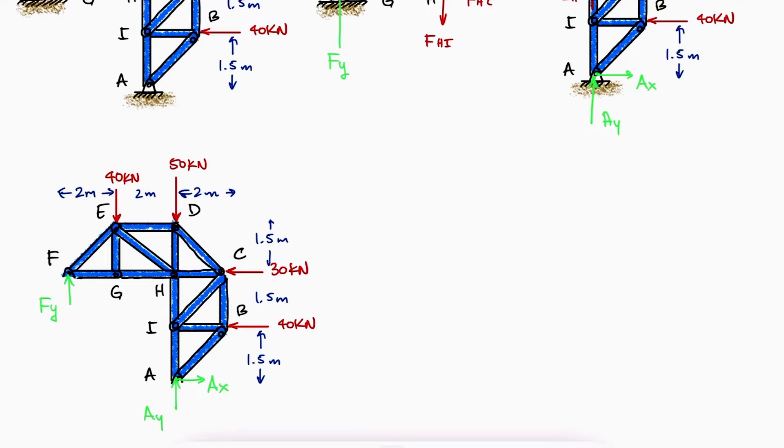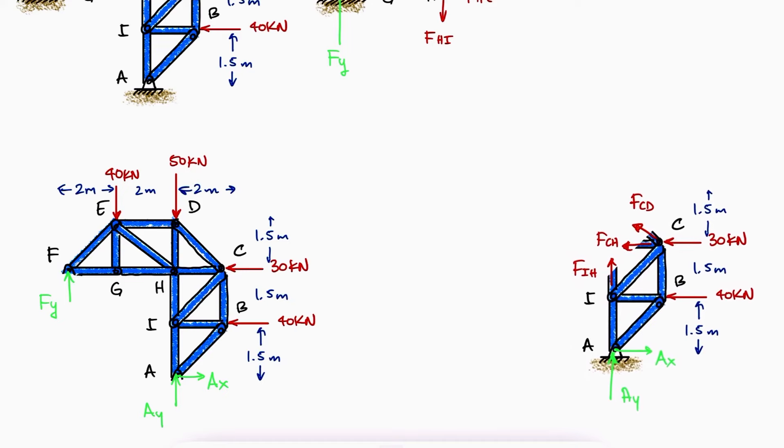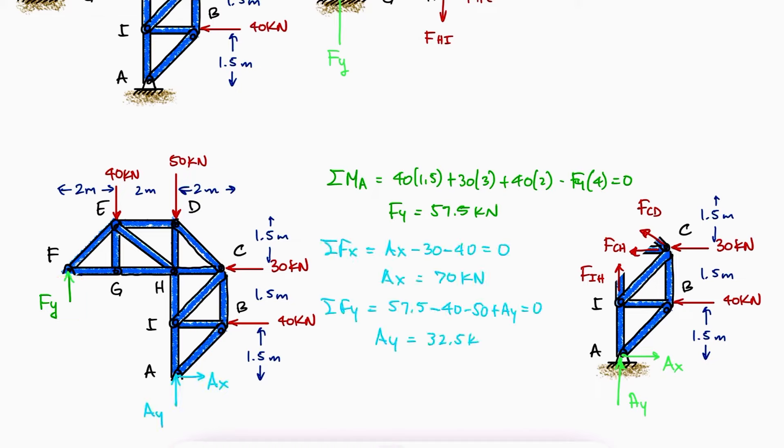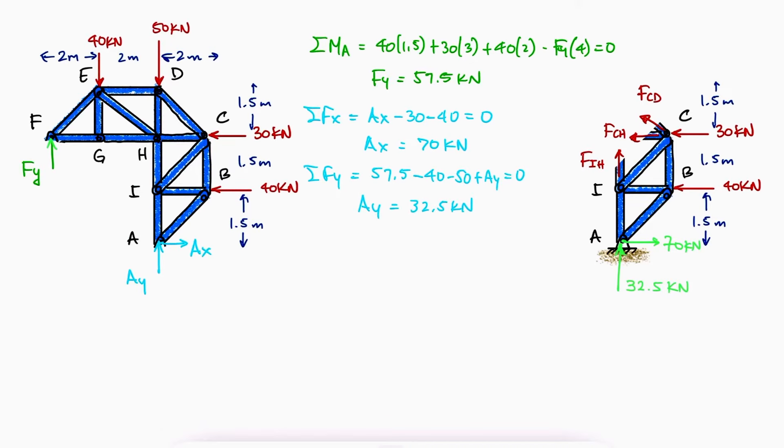If we're going to use the bottom right section during our method of sections later, the only reaction forces we'll need are those at A, which can be found by writing the sum of moments about A to find the reaction force at F, and the sum of forces in X and Y to find AX and AY, respectively.